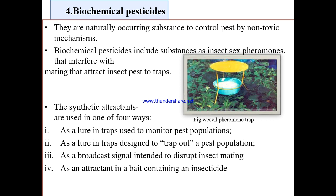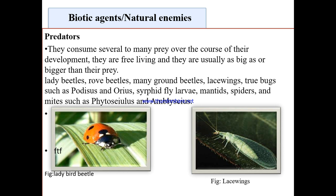Biochemical pesticides are naturally occurring substances that control pests by non-toxic mechanisms. They include insect sex pheromones that interfere with mating or attract insect pests to traps. Synthetic attractants are used in four ways: as lures in traps to monitor pest populations, as lures in traps designed to reduce pest populations, as signals to disrupt insect mating, and as attractants to bait containing an insecticide.